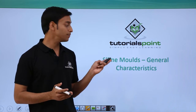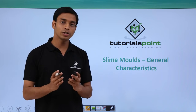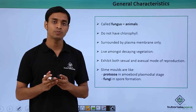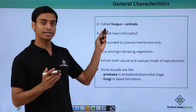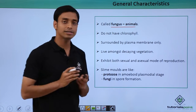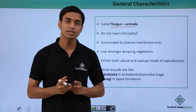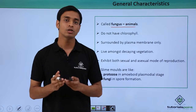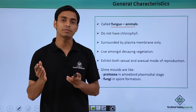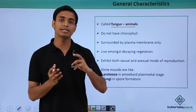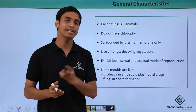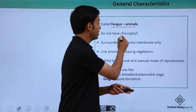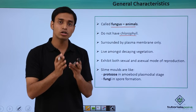We will be discussing the general characteristics of slime molds. A very important point is that they are interestingly known as 'fungus animals.' They are called so because they exhibit characteristics belonging to both fungi and animals — they have characteristics representing a fungus as well as an animal. Hence they are known as fungus animals. They do not have chlorophyll, meaning they do not belong to the photosynthetic group.